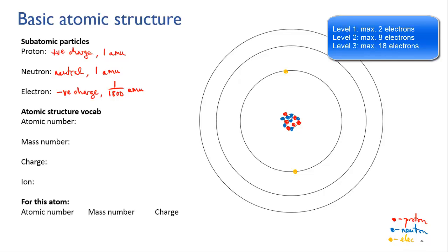So we put our first two in the first level and our remaining four in the next level. Why do we have a total of six? We said that this atom had six protons, and if it's a neutral atom, then the number of protons equals the number of electrons. So we've got six electrons to play with. We've put two in the first level, and we have a remaining four to distribute in the second level, which can hold up to eight.